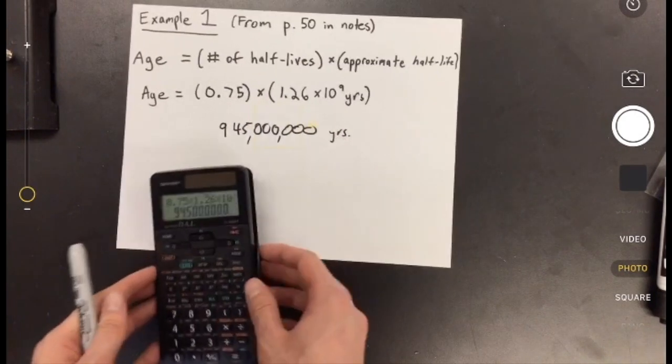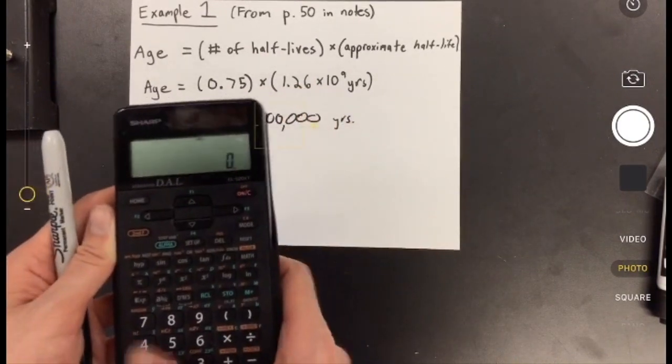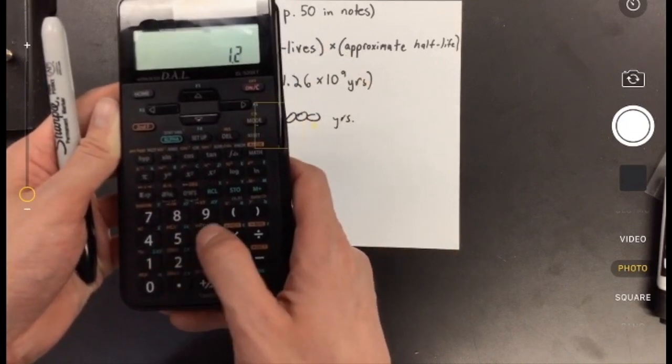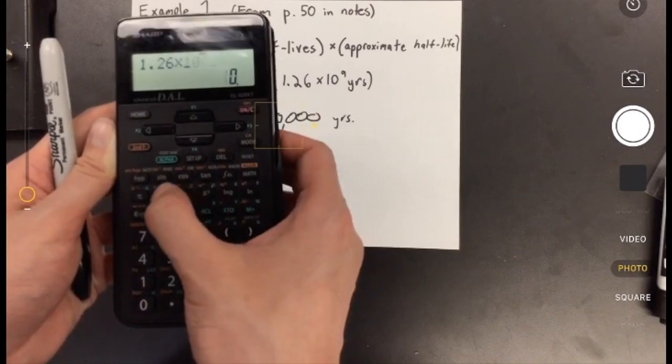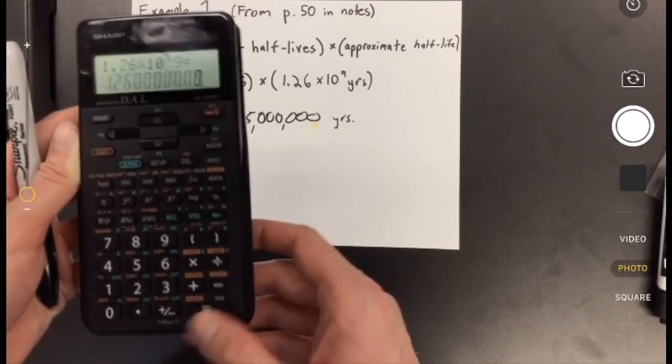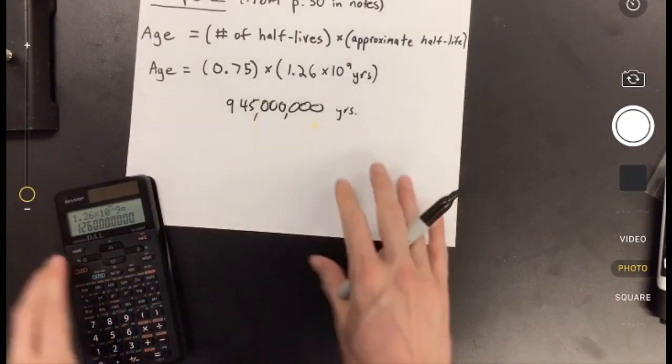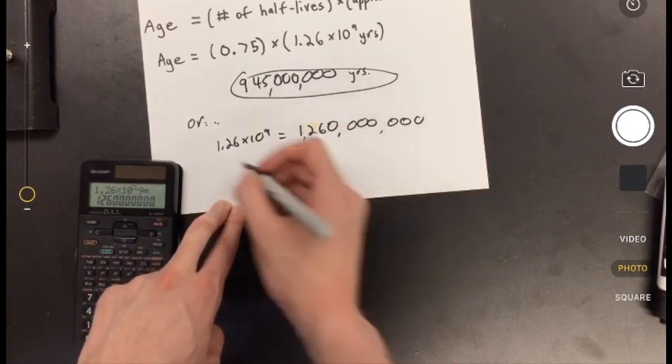You could also, if you want, if you don't want to deal with putting that all in at once, at the beginning, you can just say, okay, I'm just going to turn that into a normal number. So you could have done 1.26 times 10 to the power of 9, right? Got that. Written that down. So rewritten this as, right? And then just said, okay, so then age equals that.